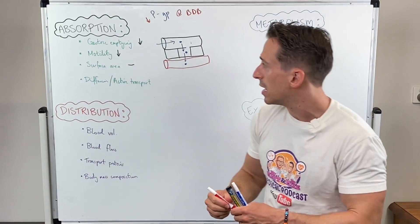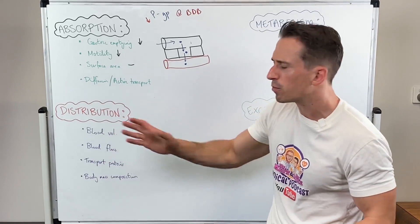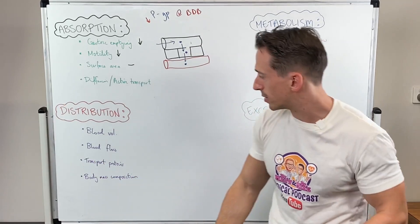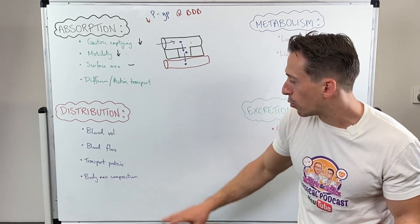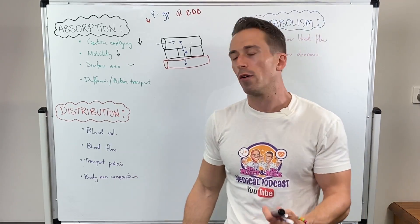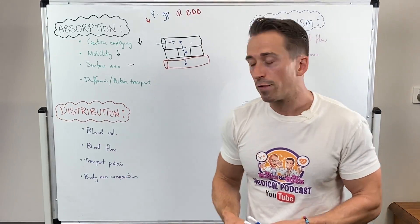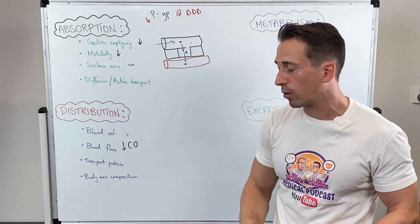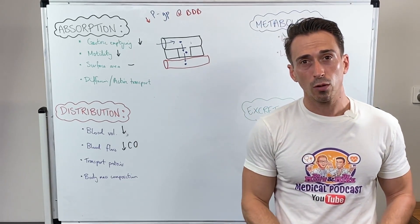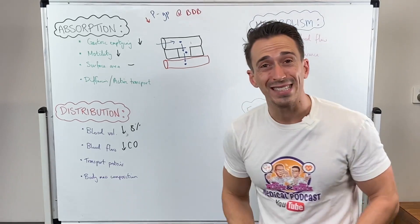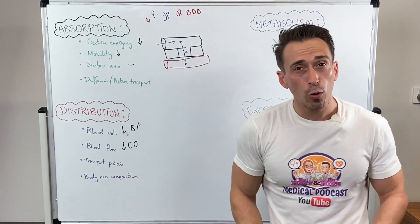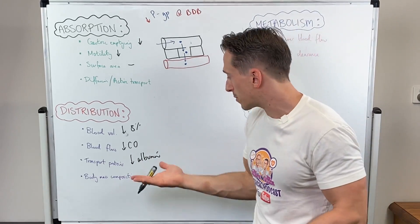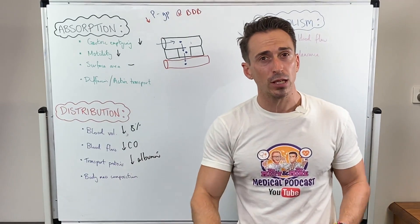Let's move on to distribution — the movement of the drug from the circulation to the tissues, cells, and organs. The factors that affect distribution include blood volume, blood flow, transport proteins like albumin, and body mass composition. For the older person: cardiac output is reduced, blood volume is reduced by around 8%, blood flow is reduced, and serum albumin is reduced, meaning there is less protein available to carry drugs around.